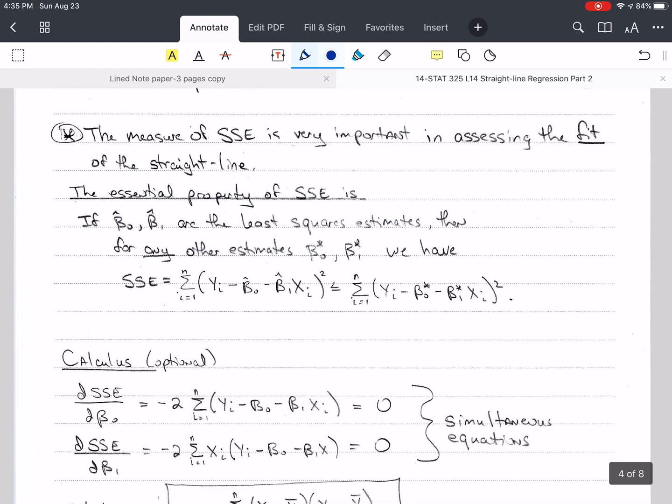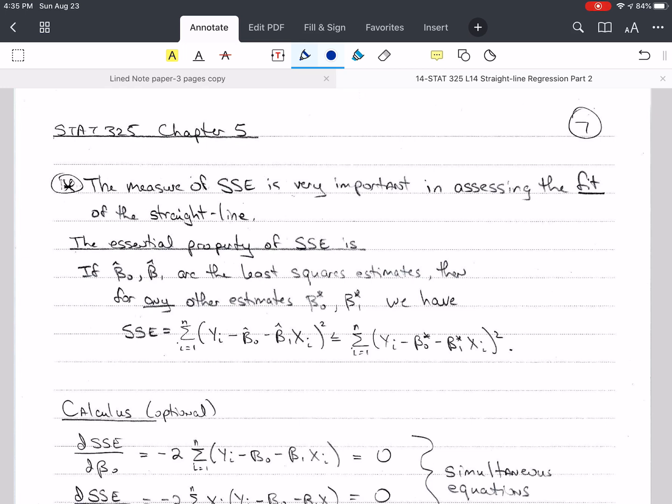So the measure of SSE is really important in assessing the fit of the straight line. It's very important there. And so there's an essential property of SSE. And that is if we have beta 1 hat and beta not hat as the least squares estimates, then any other estimate that we come up with for these, we'll call it beta not star and beta 1 star, we have to have this relationship. In fact, this relationship is true. That the sum of squares error calculated using beta not hat and beta 1 hat, that sum of squares error is always less than or equal to any other. So basically we're saying we have the best sum of squares error that we can get using these estimates.